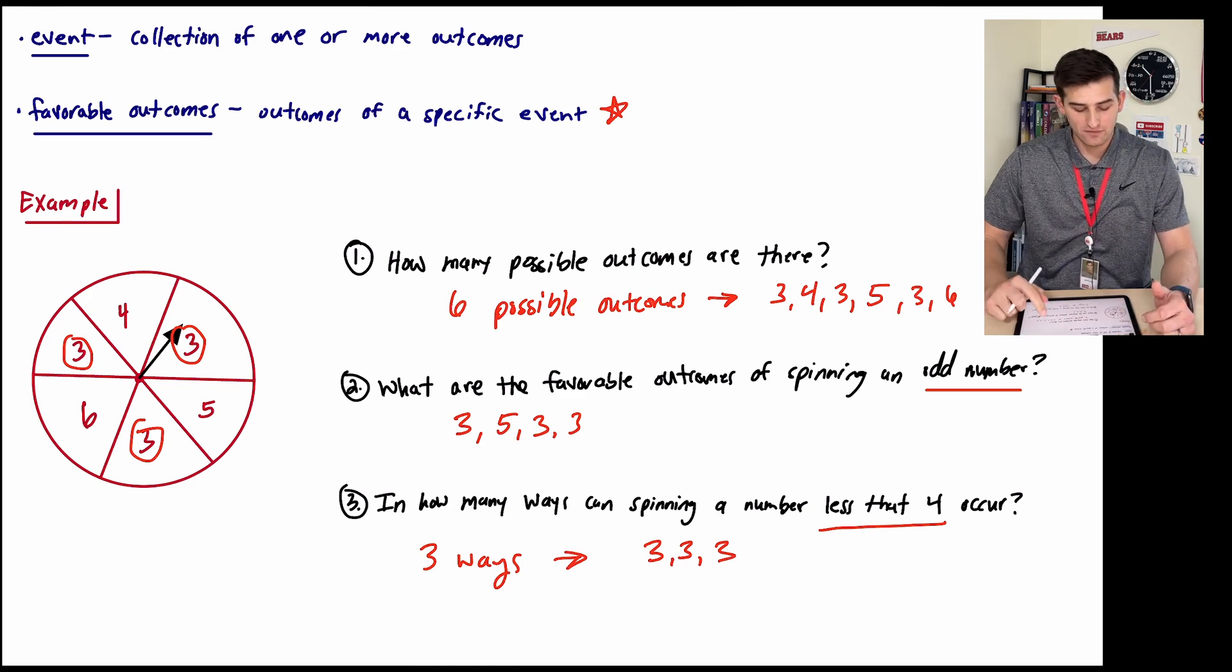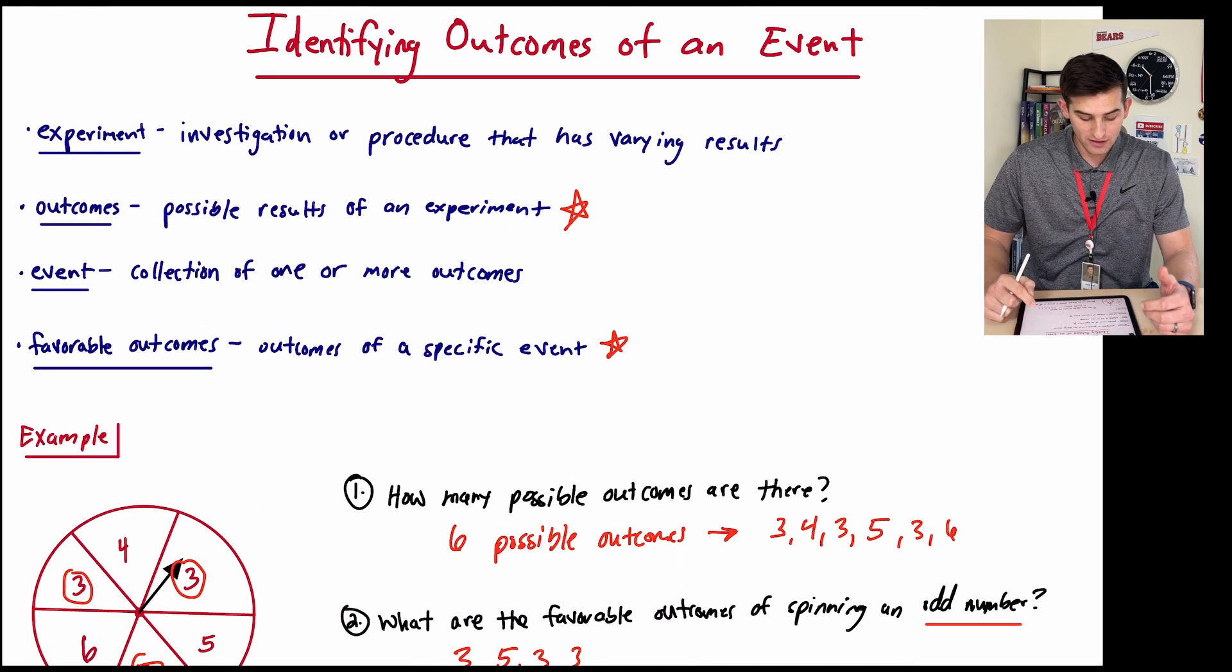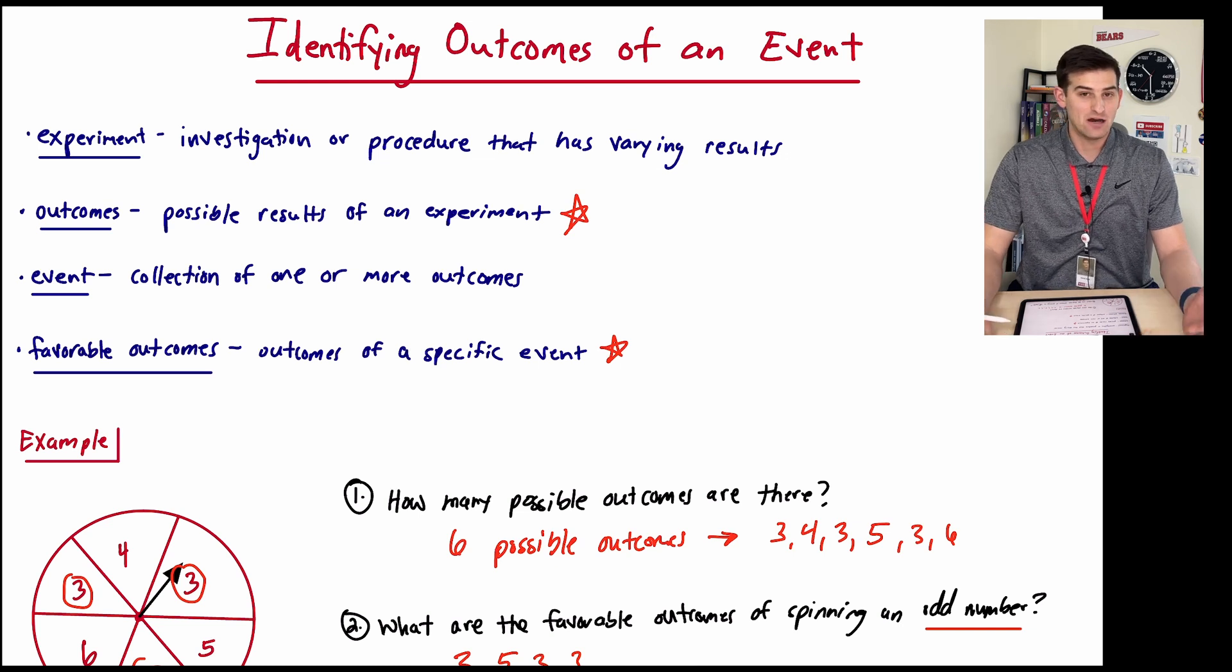So that's a quick breakdown of what outcomes of an event are, what an experiment is in math and outcome, event, and also favorable outcomes.